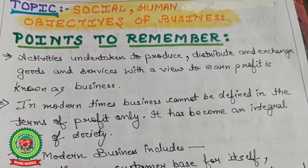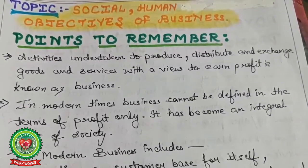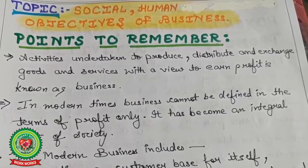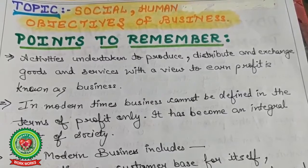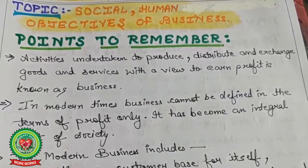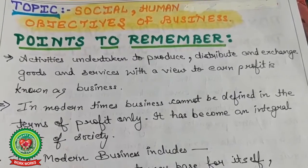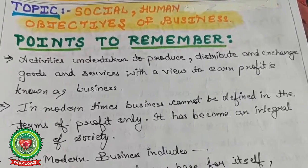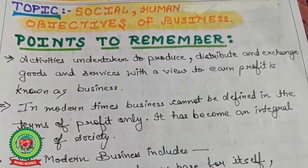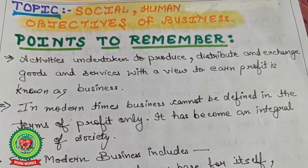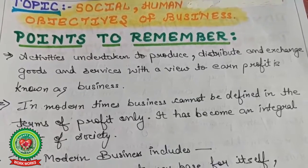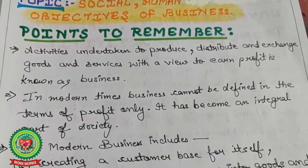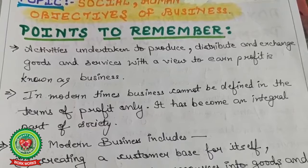First point: activities undertaken to produce, distribute, and exchange goods and services with a view to earn profit is known as business. Simply, business involves three activities — production, distribution, and exchange of goods and services.